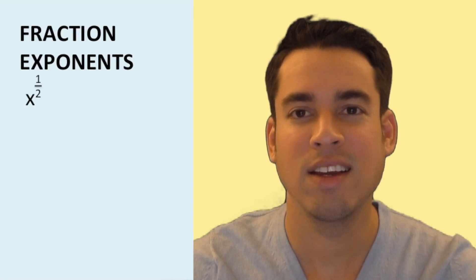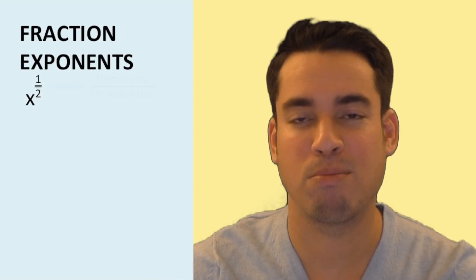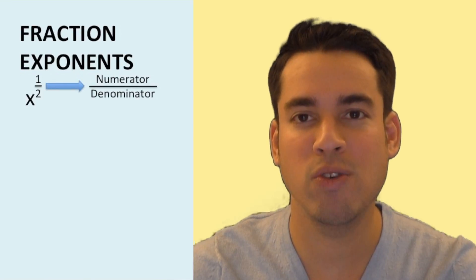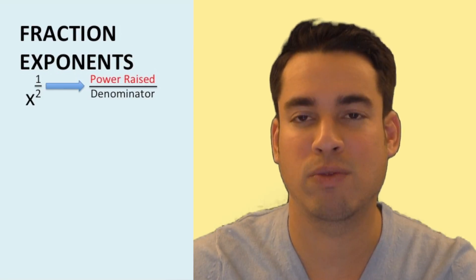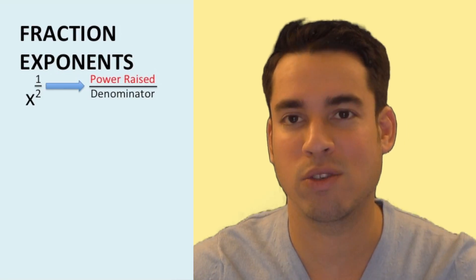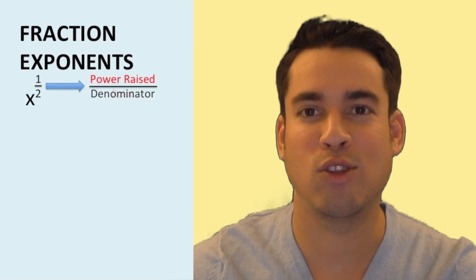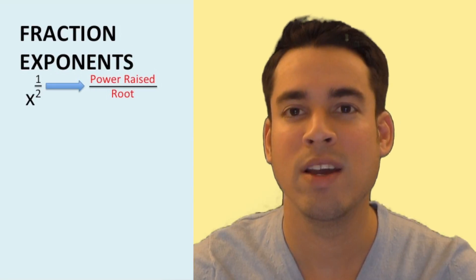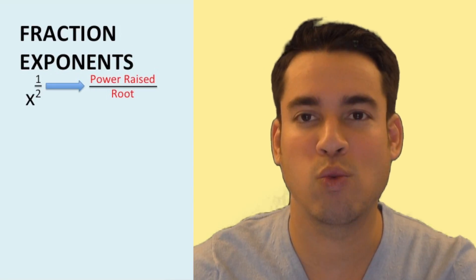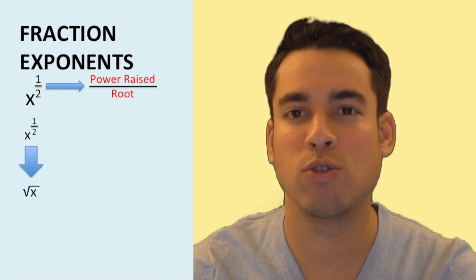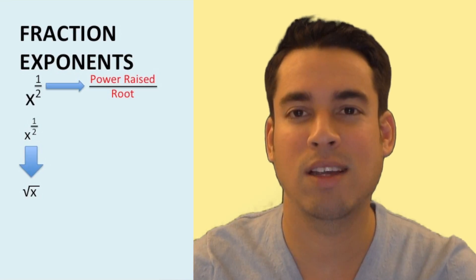Finally, let's talk about fractional exponents. For example, x to the one half: break it down by numerator and denominator of the exponent. The numerator is the power — in this case one, so it's just x to the first. The denominator indicates the root — a two means we're taking the square root. So x to the one half is simply the square root of x.